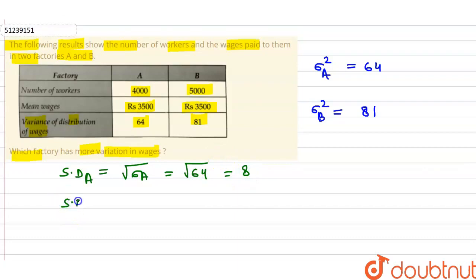In the same way, the standard deviation of B is the square root of 81, which is 9. The standard deviation for factory A and factory B is 8 and 9. So, standard deviation has more value for B.